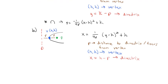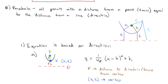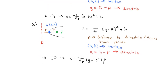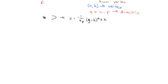As a side note, if the parabola opens to the left, we just have a negative in front: x equals negative (1 over 4p) times (y minus k) squared plus h. So with the parabola, the equation is based on the direction. With this in mind, let's see if we can find some equations of parabolas.